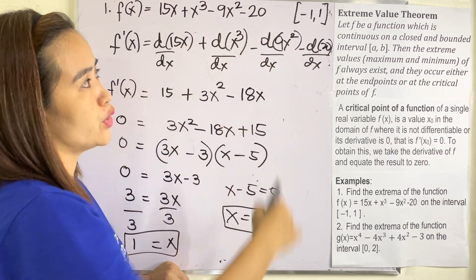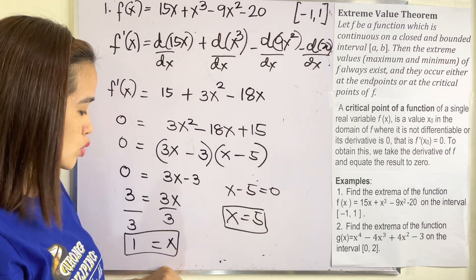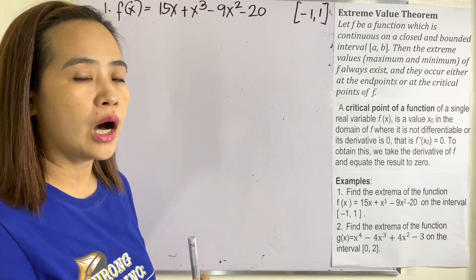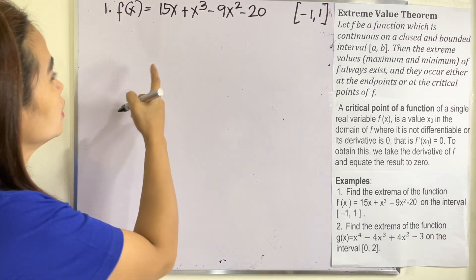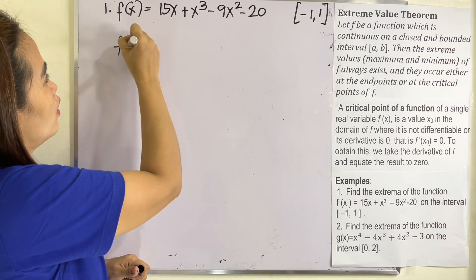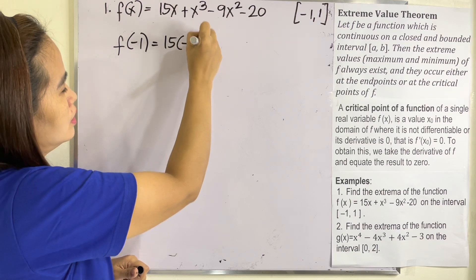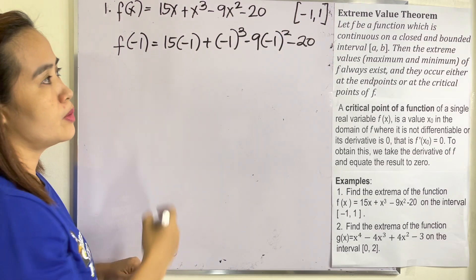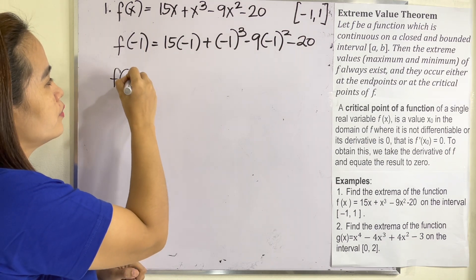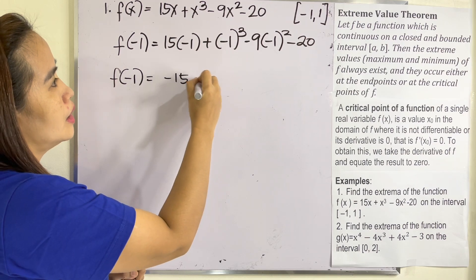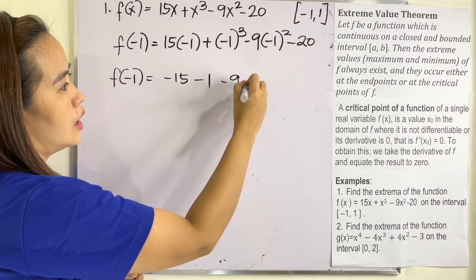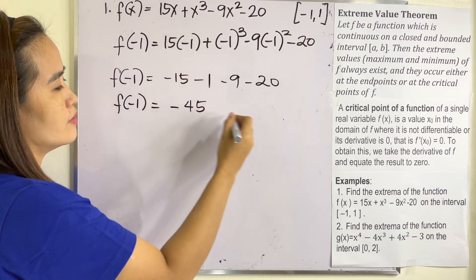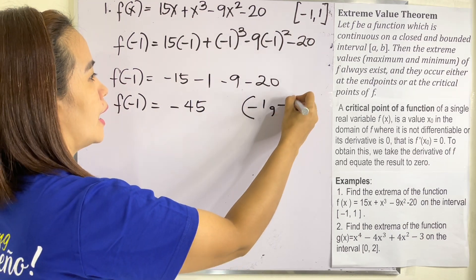We evaluate F at the endpoints and the critical point within the interval. F(−1) = 15(−1) + (−1)³ − 9(−1)² − 20 = −15 − 1 − 9 − 20 = −45. So we have the point (−1, −45). Next, F(1) = 15(1) + 1³ − 9(1)² − 20 = 15 + 1 − 9 − 20 = −13. So we have the point (1, −13).